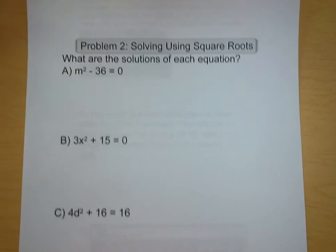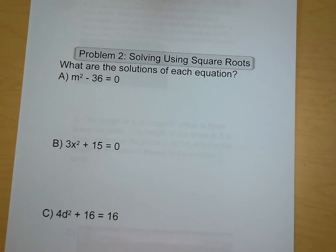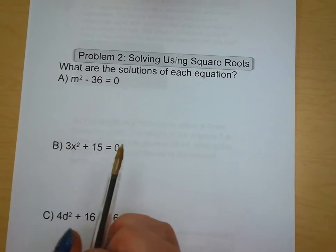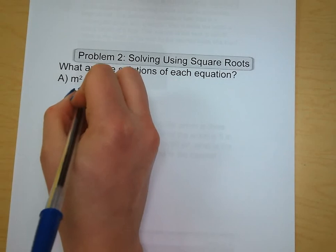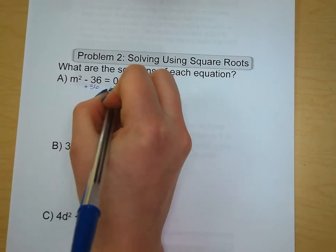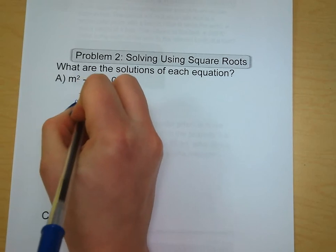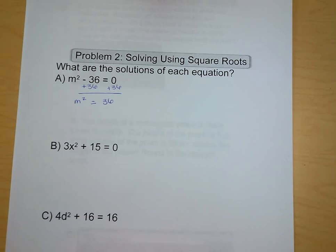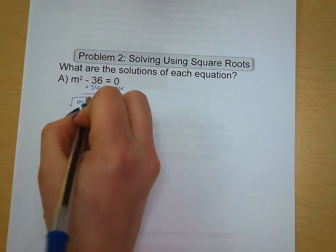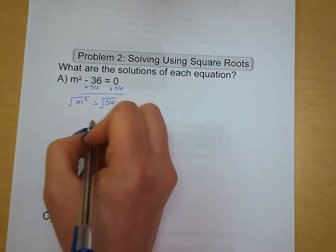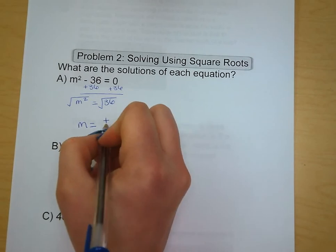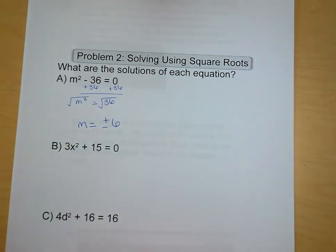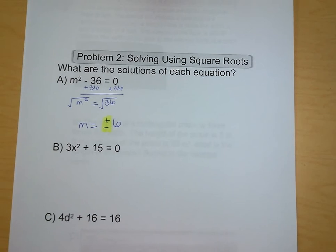Problem number two is solving quadratic equations using square roots. This method works when we have just an x squared term and a constant. First, get variables on one side and constants on the other — add 36 to both sides to get m squared equals positive 36. Then take the square root: the answer is plus or minus 6. Remember, you need both because negative 6 times negative 6 also gives 36.